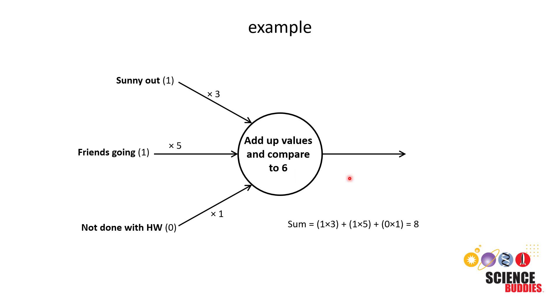We can do the math to calculate that sum. So first we have a one for it is sunny out times a three for that weight, plus a one for your friends are going times a five for that weight, plus zero for not done with your homework times one. That adds up to eight, which we can then compare to our threshold of six. In this case, we see that eight is greater than or equal to six, so the output will be one—we should go to the playground.